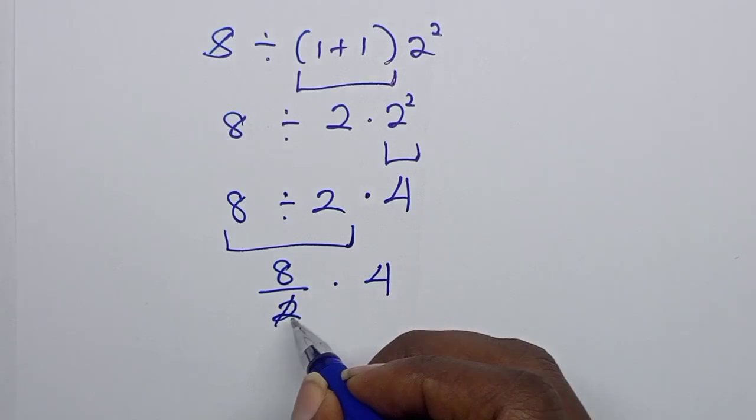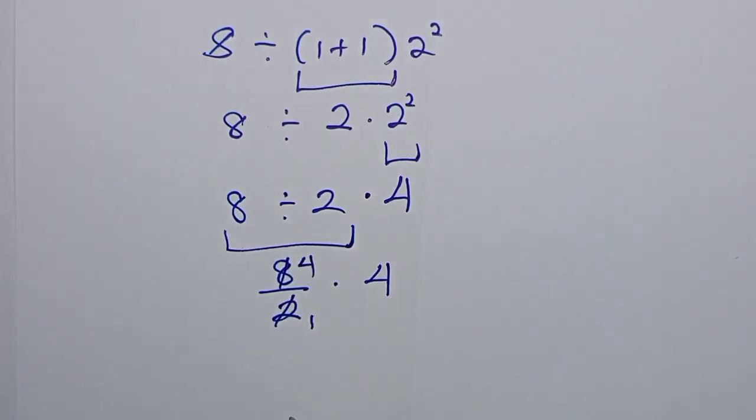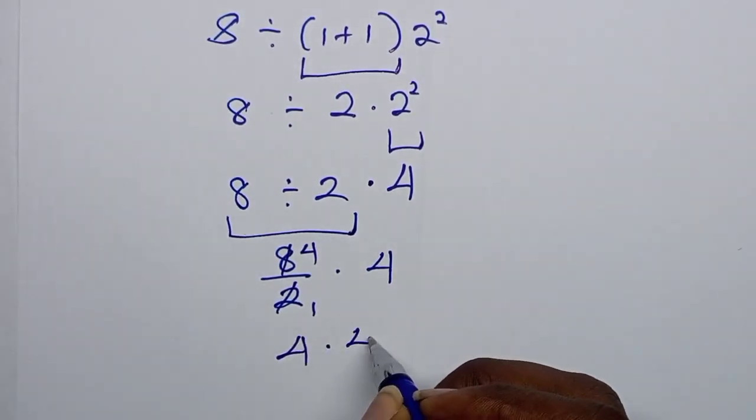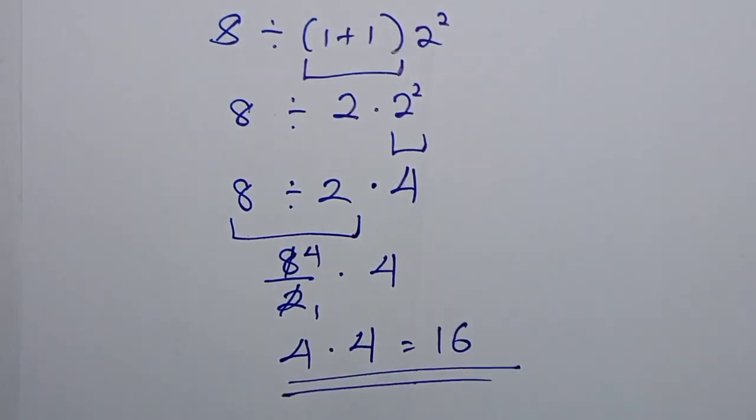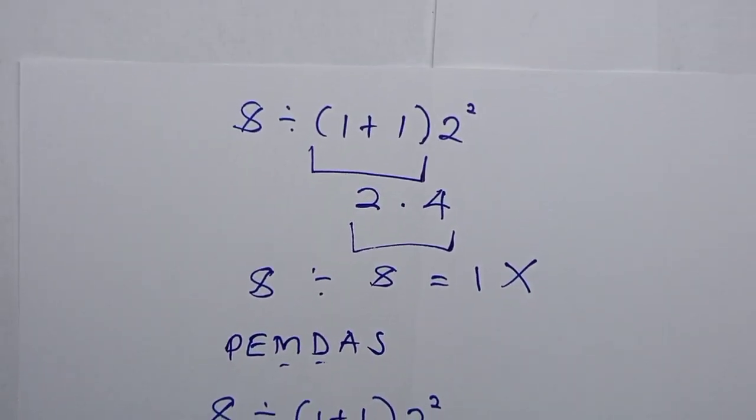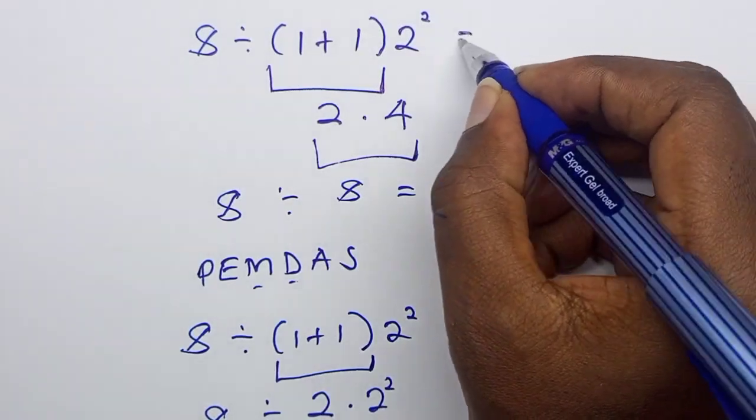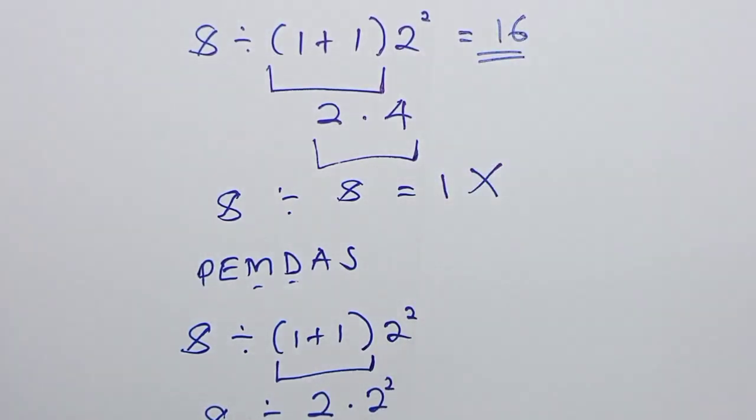So this divided by this is 4. So 4 times 4 which equals 16. So 16 is the right answer for this question here. This equals 16.